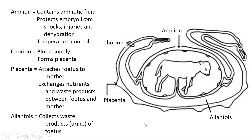Any waste products the fetus produces — like urea — go through the placenta into the mother, and then the mother urinates or defecates them out. Then we also have the allantois, which is between the amniotic fluid area and the placenta. Humans do not have this, but cows and most mammals do. It's a sack-like area that collects waste products like urine of the fetus temporarily, until they can be transferred through the blood into the mother's system.